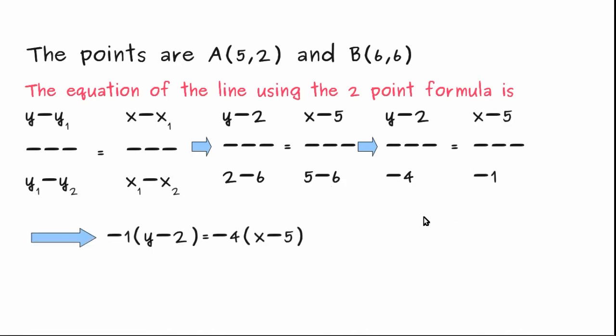We can further simplify this. We can cross multiply these two sides and we have minus 1 into y-2 is equal to minus 4 into x-5 which results in minus y plus 2 is equal to minus 4x plus 20. Then you just move the x onto the other side, the 20 also onto the other hand side and we get this equation as 4x minus y minus 18 equal to 0.